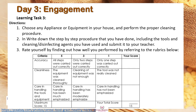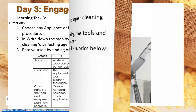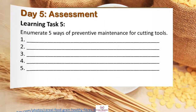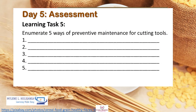Number 3: Rate yourself by finding out how well you performed by referring to the rubrics below. Day 4 — Assimilation. Learning Task Number 4. Directions: Have a look at the picture. What can you say about the picture? What should you do to make the tools last longer and function better? Submit your answer to your teacher in essay form. Day 5 — Assessment. Learning Task Number 5: Enumerate 5 ways of preventive maintenance for cutting tools.